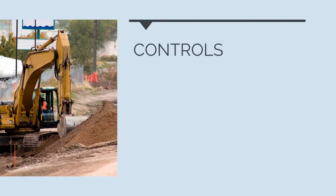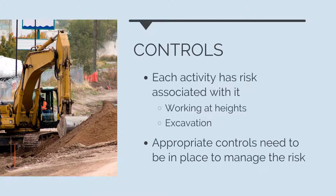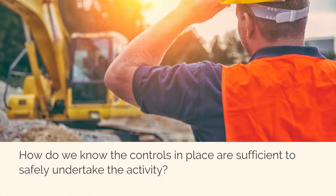The first and most important strategy that underlies everything we do in construction health and safety management are controls. Each construction activity has specific risks associated with it. For example, working at heights has risks like a person falling or dropping an object on somebody. Excavation has risks like striking an unknown gas or electricity pipe or a trench collapsing. To safely undertake any activity, appropriate controls need to be in place to eliminate or minimise the risk event from taking place.